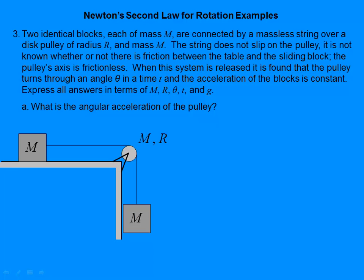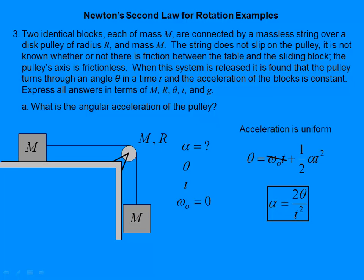Notice: the string does not slip on the pulley — key. So there is friction between the string and the pulley. The pulley's axle is frictionless. The acceleration is constant, so kinematic equations apply. The angular displacement is θ, time is t, and it starts from rest so ω₀ = 0. Using the third kinematic equation and solving for alpha, we get α = 2θ/t².